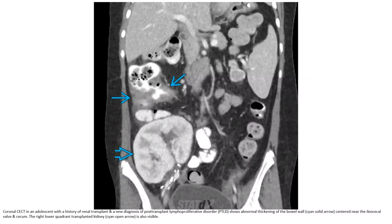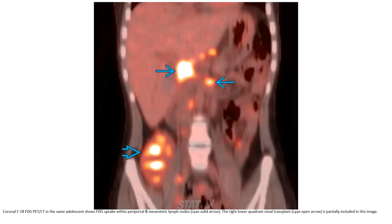Here is a CT scan in a patient with a history of renal transplant and new diagnosis of post-transplant lymphoproliferative disorder. Abnormal soft tissue masses are seen near the hilum and adjacent to the renal transplant in the right lower quadrant. The transplanted kidney is also visible and partially included.